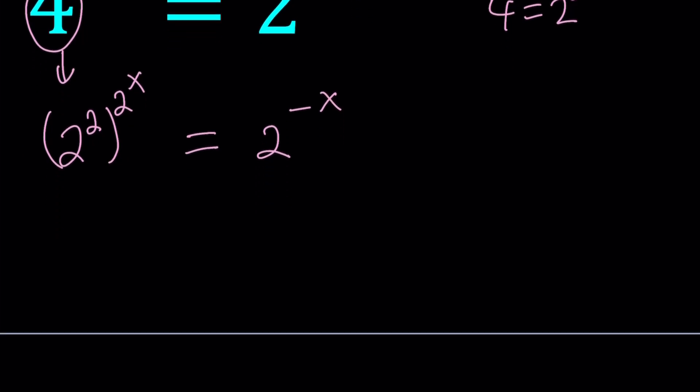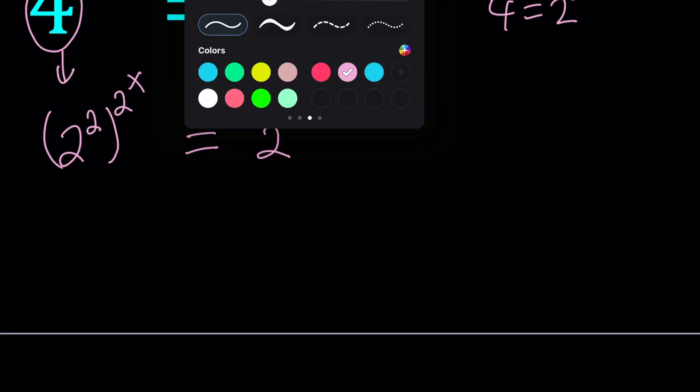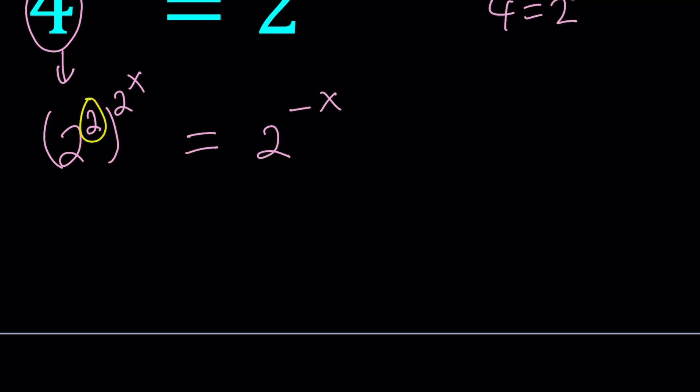Great. So let's go ahead and use the power of a power property. In this case, we are supposed to multiply the exponents. So we're going to multiply these, and write this as 2 to the power 2 times 2 to the power x equals 2 to the power negative x.